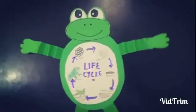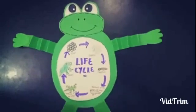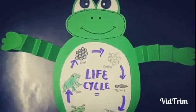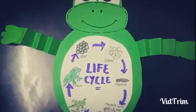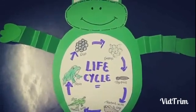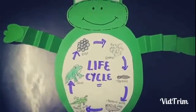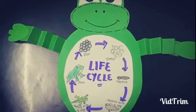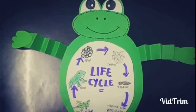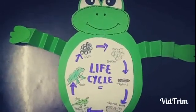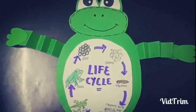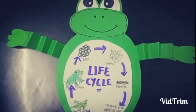Frogs are cold-blooded living creatures and also known as amphibians. Now, what do you mean by cold-blooded animals? Cold-blooded animals require less amount of energy and maintain their body temperature according to changes in the environment. They are totally different from warm-blooded animals, as warm-blooded animals can produce heat by their own body. Amphibians are animals that live on land and in water as well — they are termed as amphibians. For example, frogs, turtles, and toads.